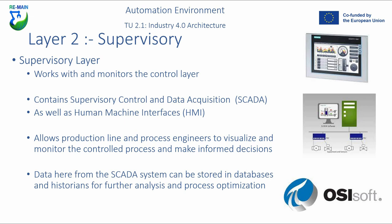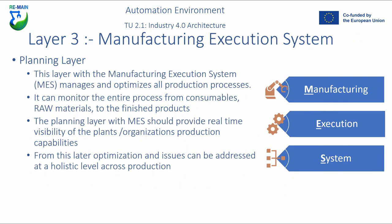Above layer one, layer two is the supervisory layer. This works with and monitors the control layer and is where you find your SCADA — supervisory control and data acquisition — systems as well as HMI systems. It allows production line and process engineers to visualize, monitor, and control the process and make informed decisions. Data from the SCADA system can be stored in databases and historians for further analysis and process optimization. As a user, this is the layer you may come into contact with the most.